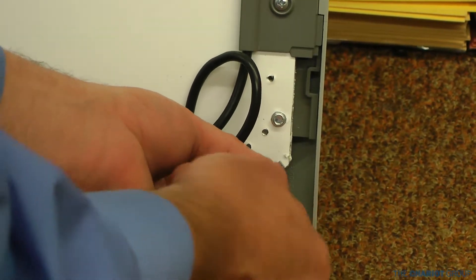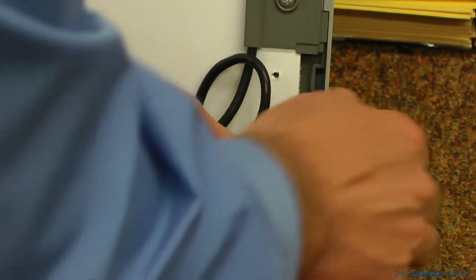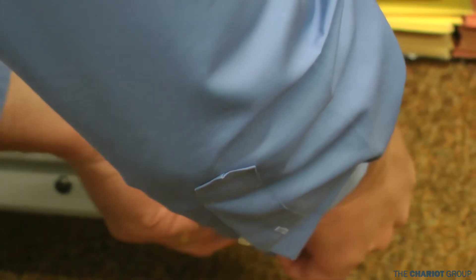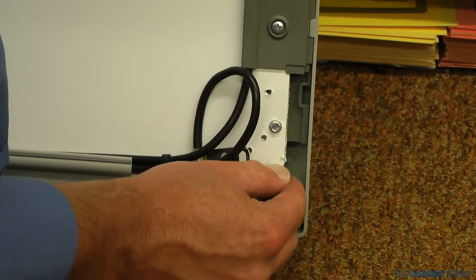Now when you remove these two Torx bits, there's two different types of cameras, there's a camera A and a camera B. This corner uses a camera A. So you can see right here, we're just going to take the little tabs and it's going to slide right out. Pull that out like this.